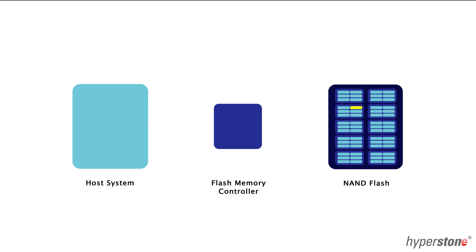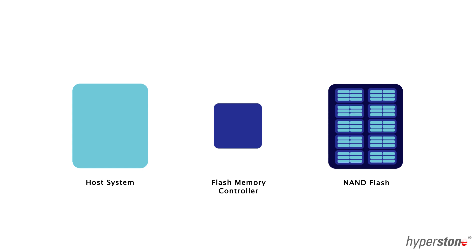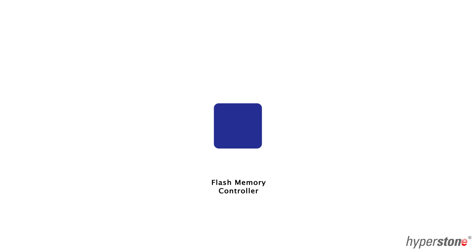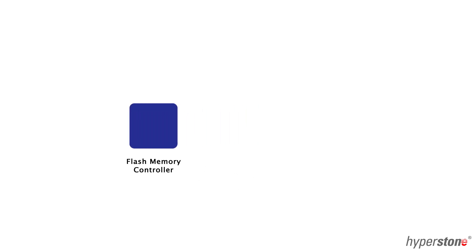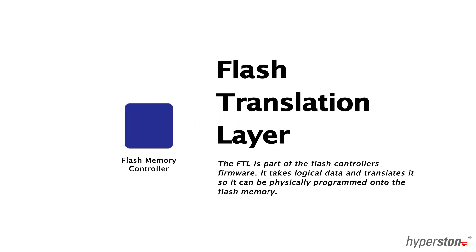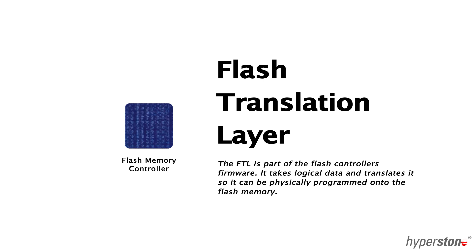The flash memory controller's firmware then tells the data exactly where to go on the NAND flash. The part of the flash memory controller which tells the data where to go is called the Flash Translation Layer, or FTL. It takes the logical data and translates it so it can be physically programmed onto the NAND flash.